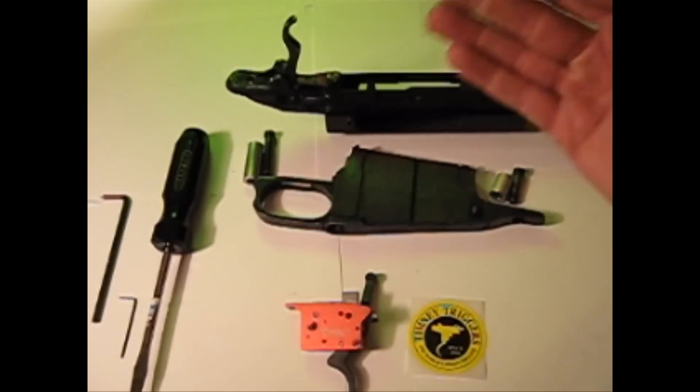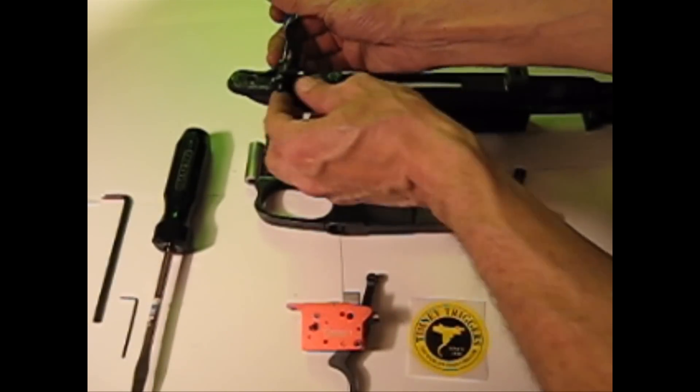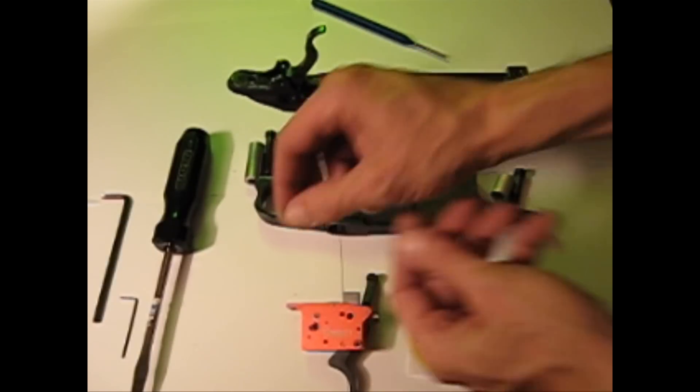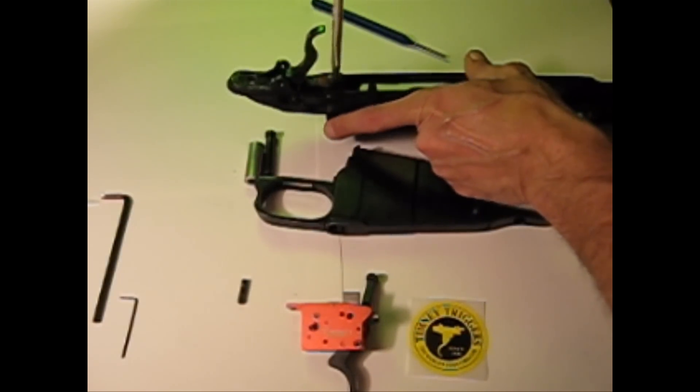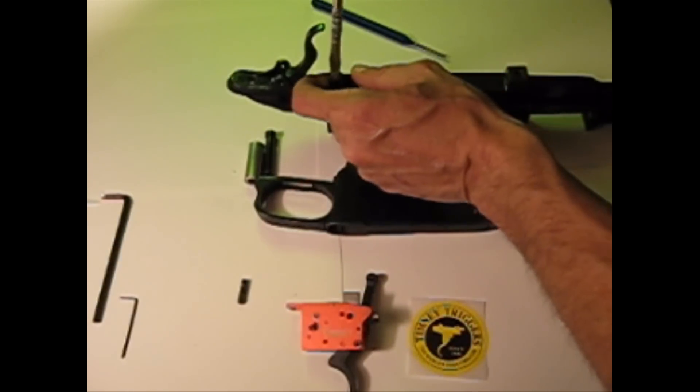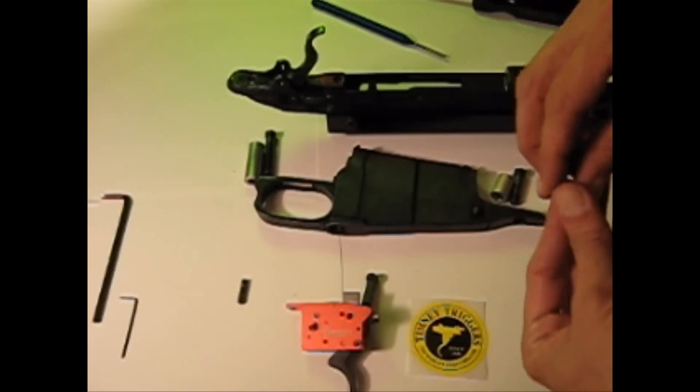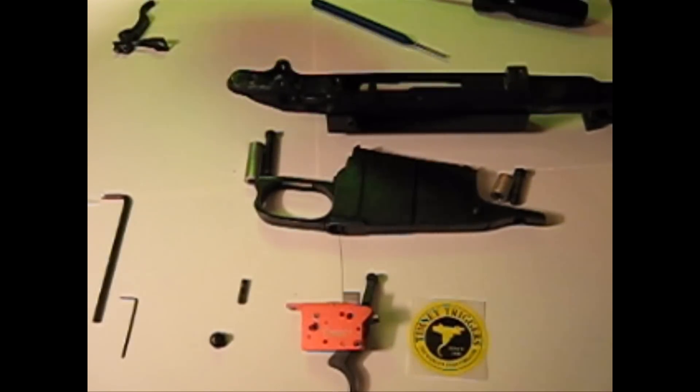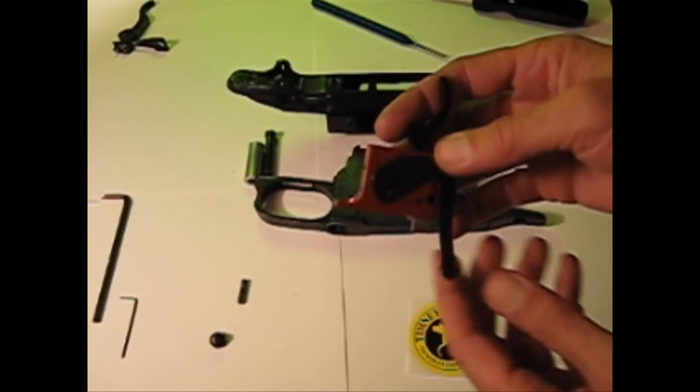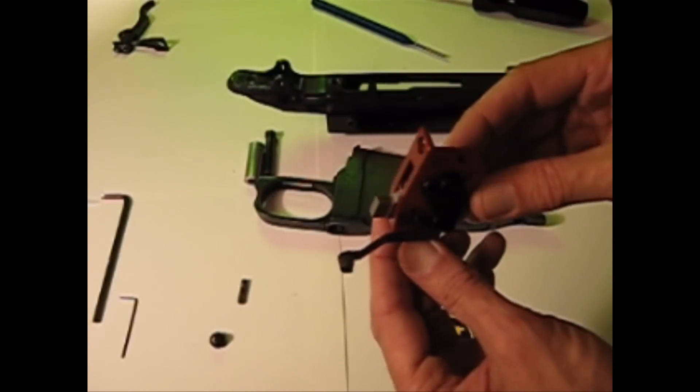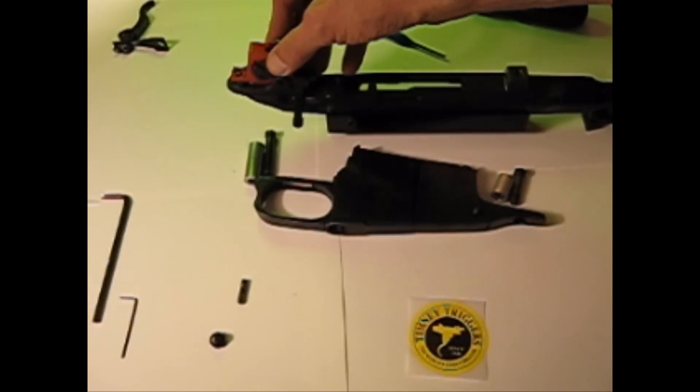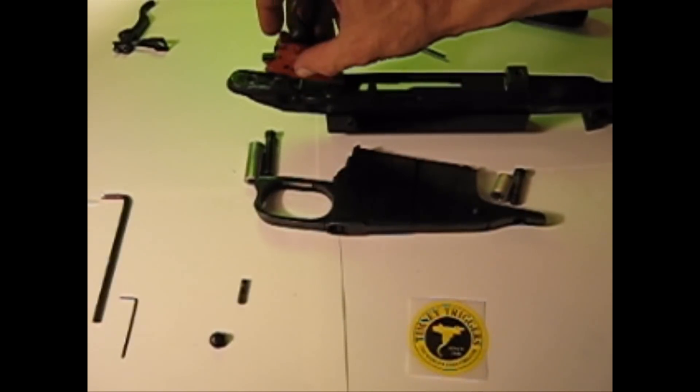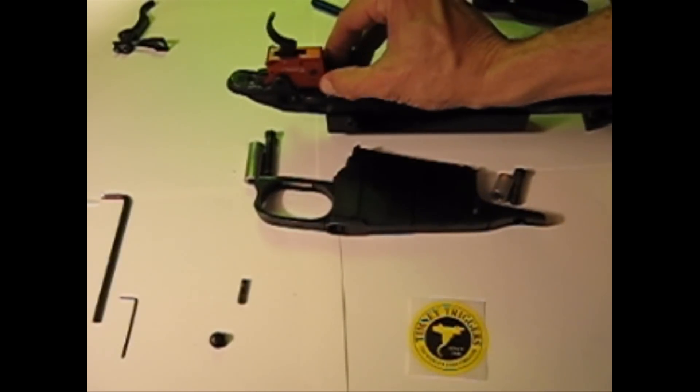So we press out the pin, take out the old assembly, keeping the pin and the screw which holds the sear aside. The lovely, precisely manufactured Timney unit sits right on top of this.